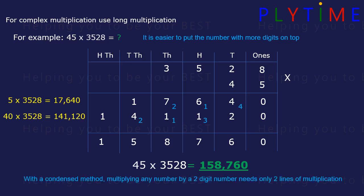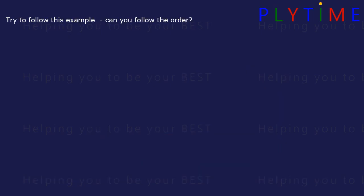With a condensed method, multiplying any number by a two-digit number needs only two lines of multiplication. Try to follow this example. Can you follow the order? 2,224 times 38.